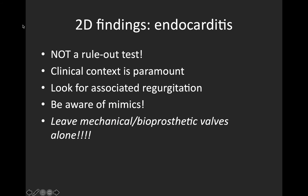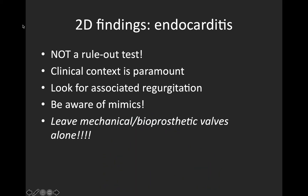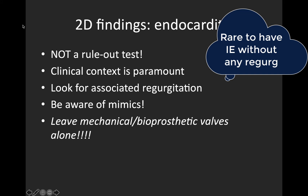A few really important notes here. The first and most important is that this is not a rule-out test. If you don't see anything on the valve, it does not rule out endocarditis. If you are clinically suspicious, the patient needs a comprehensive echo — a TTE at least, and sometimes a transesophageal echo. Even if you do see something on the valve, the patient will almost always require further evaluation. It's also helpful to use color Doppler to look for valvular regurgitation, as it's very unlikely to have endocarditis in the absence of any regurgitation.